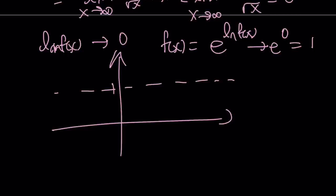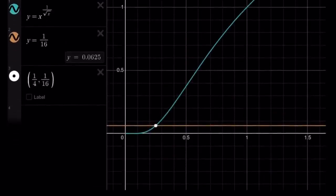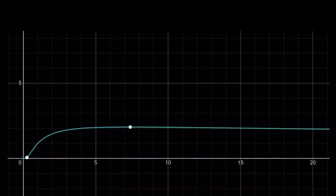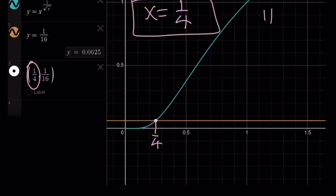So the picture is: the function starts near 0, increases to a maximum at x equals e squared, then decreases and approaches the horizontal asymptote y equals 1 from above. We are setting this function equal to 1/16, which is below y equals 1. Looking at the graph, you can see they intersect at only one point. The function goes up then comes back down toward the asymptote, so the horizontal line y equals 1/16 can only be crossed once — on the decreasing portion. Therefore the only solution is x equals 1/4.